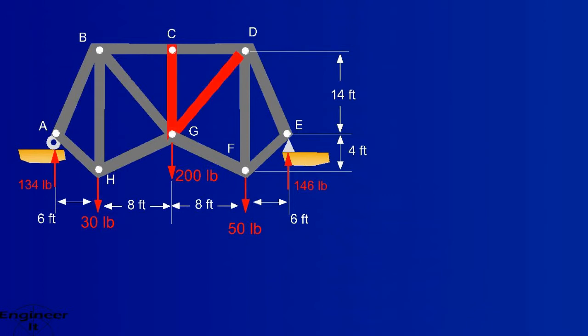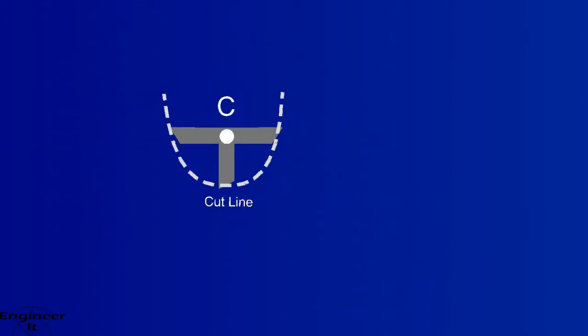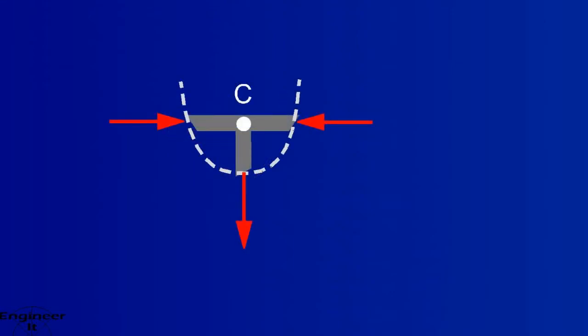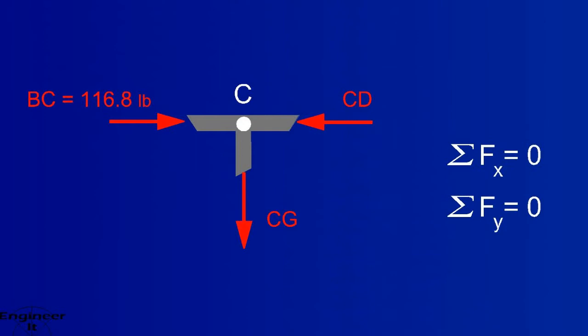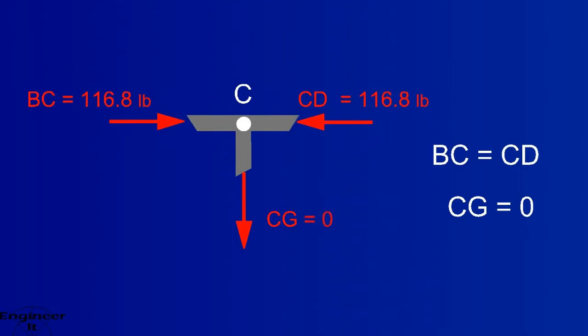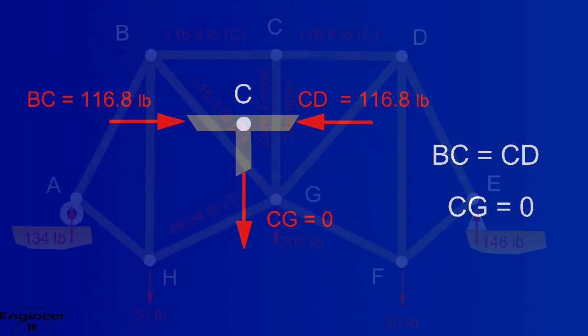Two more forces to find. But let's take a look at C first. Draw a cut line for the section of interest. Curved lines are okay. Add force vectors representing the forces applied to the members. We know member BC is in compression. And the other two forces are found from the equations of equilibrium. So CD must be in compression as well to counter BC in this free body diagram. But what about CG? There's no other force to counter it at this joint. So this is telling us that it can't have a force applied to it. This type of member is called a zero force member.